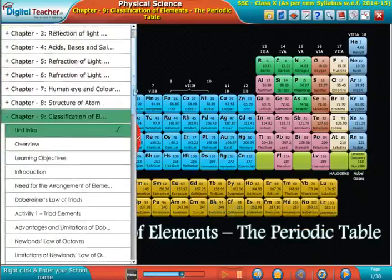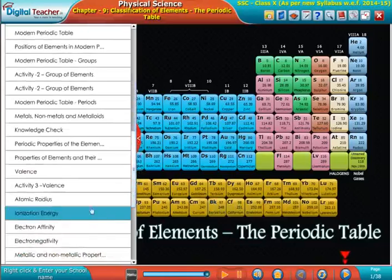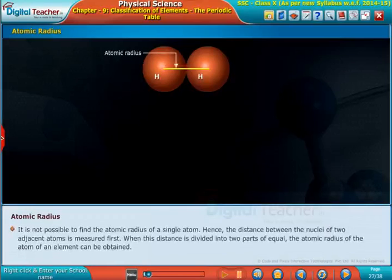Welcome to the chapter on classification of elements: the periodic table. Atomic radius - as the name suggests, for any element, the distance of the outermost shell of its atom from the center of the nucleus is known as atomic radius.